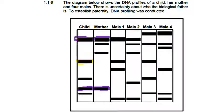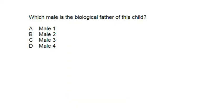Looking at the remaining bands, one band can be from either male one or male three, then another band can only be from male three, and the last band appears to be from male three and possibly male four, though it's off slightly. Most of the child's bands are accounted for by male three, so male three is most probably the biological father. The answer to 'which male is the biological father?' is C, which is male three.